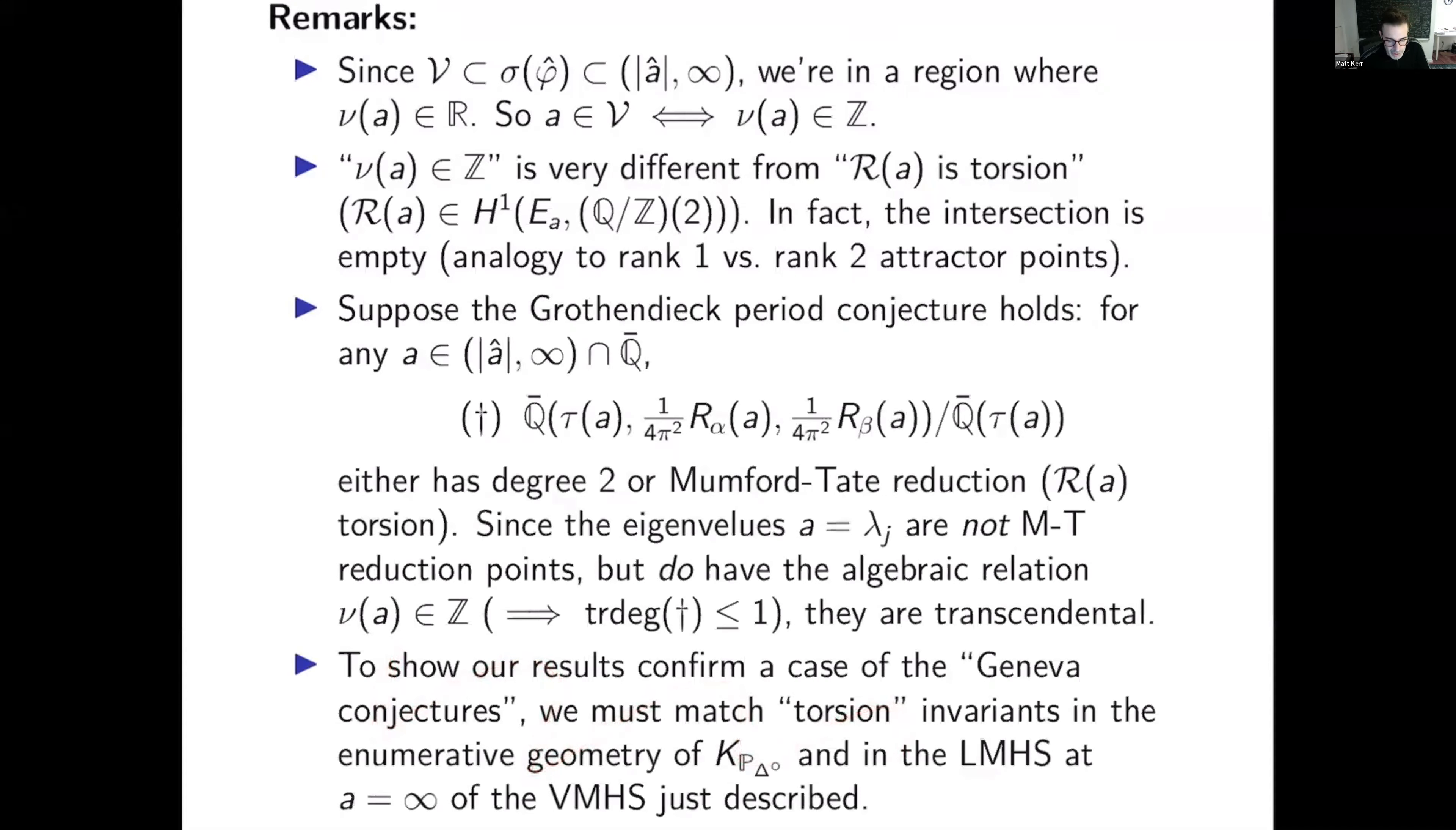But of course we're not working in perturbative topological string theory. We're working in a non-perturbative setting. We get a different answer. Okay so ignore this for the time being. Suppose the Grothendieck period conjecture. So what that's going to say in this setting is that for any a that is in Q bar the extension of Q bar function fields here or fields generated over Q bar here. This one is generated by the period ratio and two regulator periods. This one is just generated by the period ratio. Either it should have degree two or Mumford-Tate reduction which means that r of a is torsion. That's the only possibility.